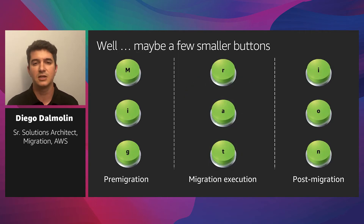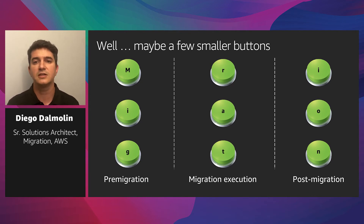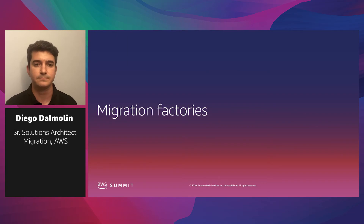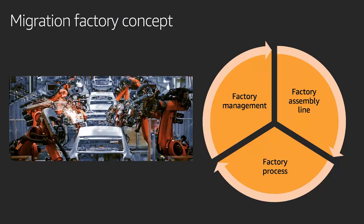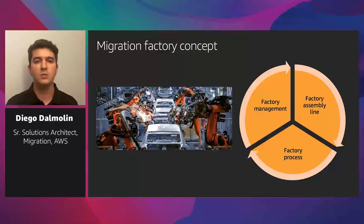Well, maybe instead we could have a few smaller buttons — specific migration activities that we could consider automating. So what is a migration factory? A cloud migration factory can be very similar to a car manufacturing assembly line, where we could define the process, build the required automation in the assembly line, and manage the KPIs and progress of our factory.